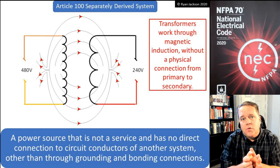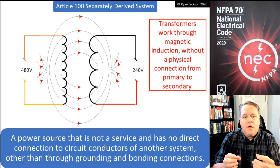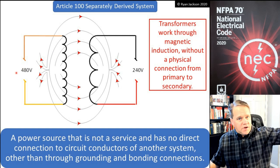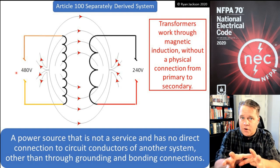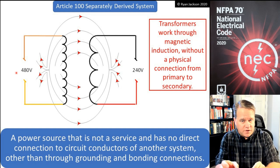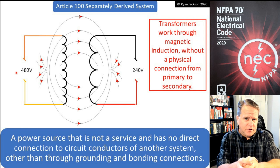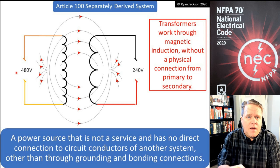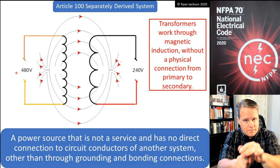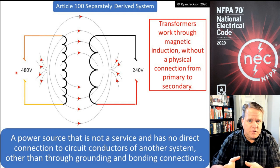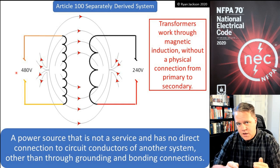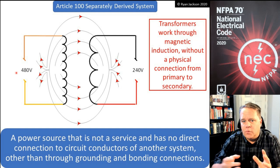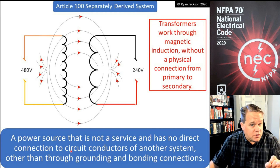On the utility side — say 480 volts — we bring it into the primary of the transformer. There's a green wire that connects to the metal parts of the transformer. We then generate a new system, maybe 240V or 120/208V, and that system also has a green wire going to its metal parts and back to the first system's disconnect. So ultimately the two are connected through green wires, but that's only through grounding and bonding connections — not a direct circuit conductor connection.